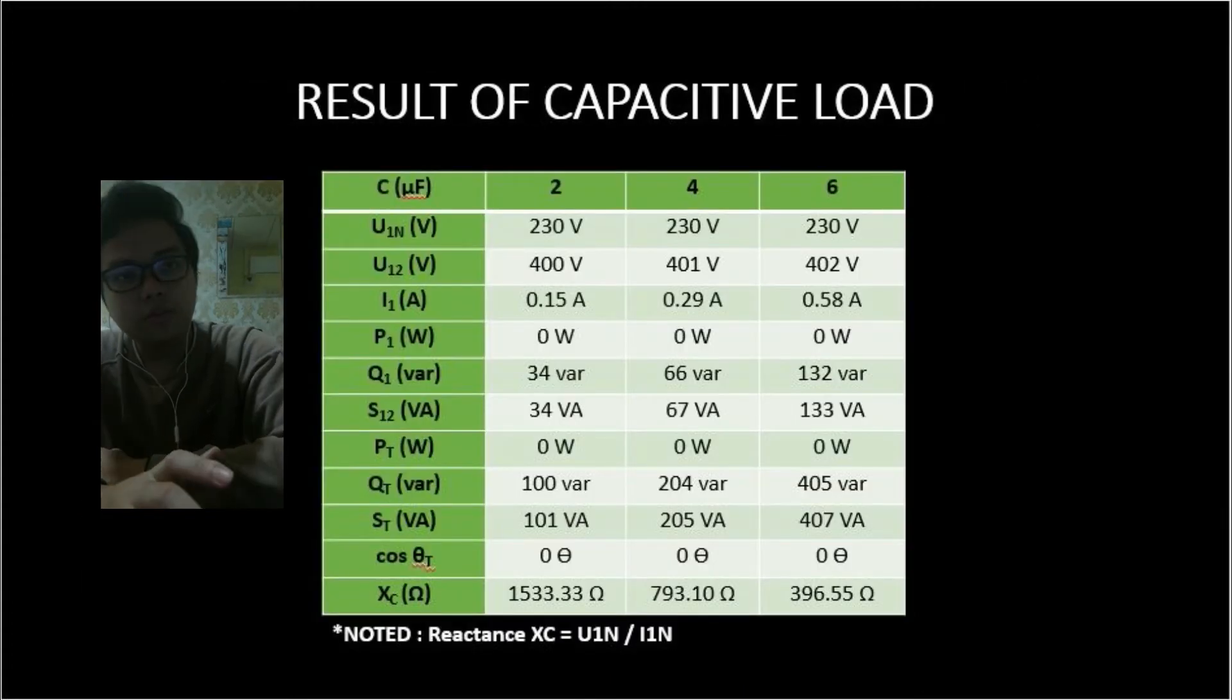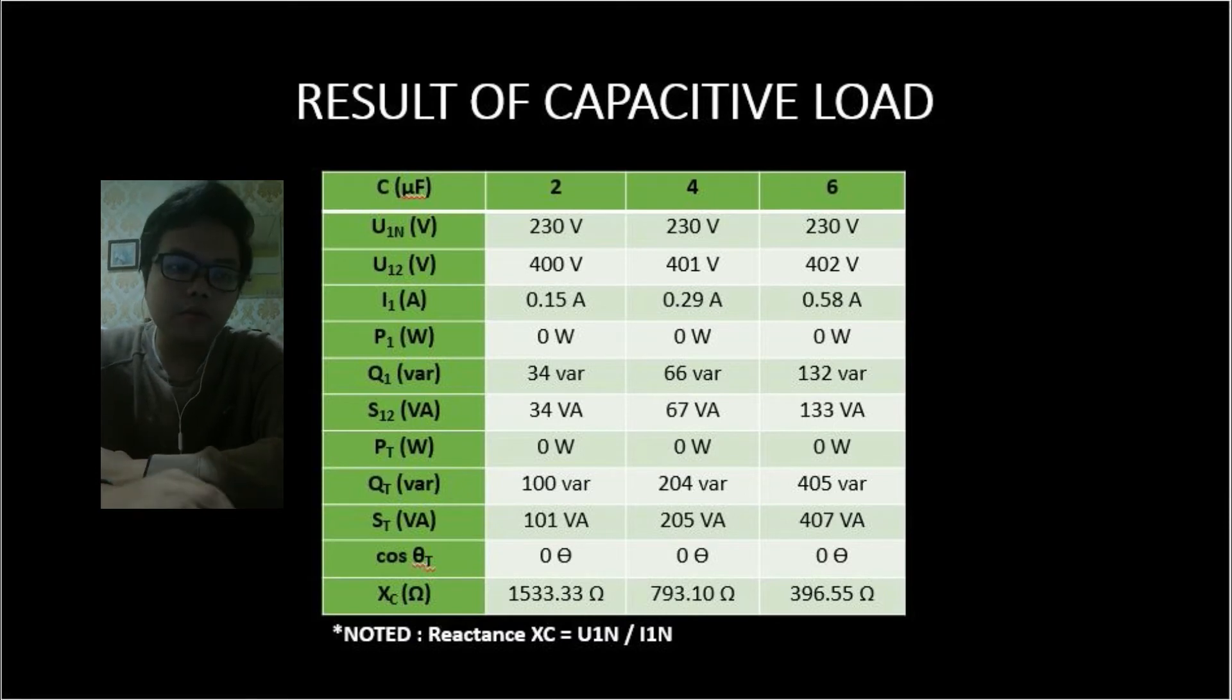Okay, this is the result of the capacitive load. So this is the result that we can get from the digital meter. Here we can get the output result. So this is the result: 230 volts, 400, 201. This is from the digital meter.